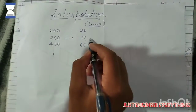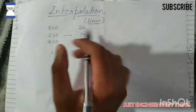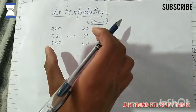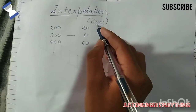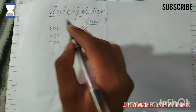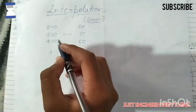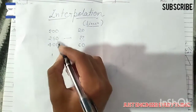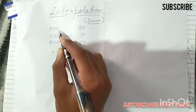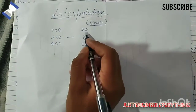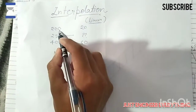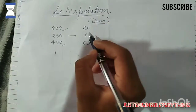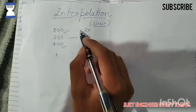We are going to do linear interpolation and interpolate our values. If we look at the steam table, we have three values — two corresponding values. For example, temperature: we will give you 200 degrees Celsius and 400 degrees Celsius, with corresponding enthalpy values.